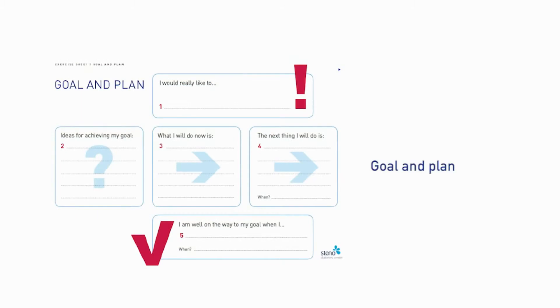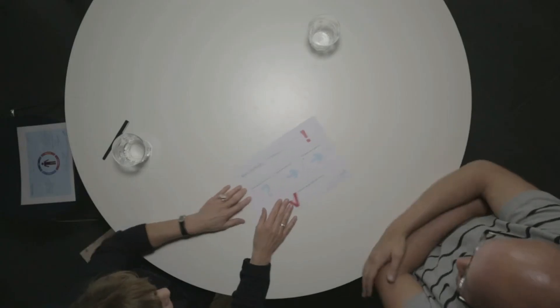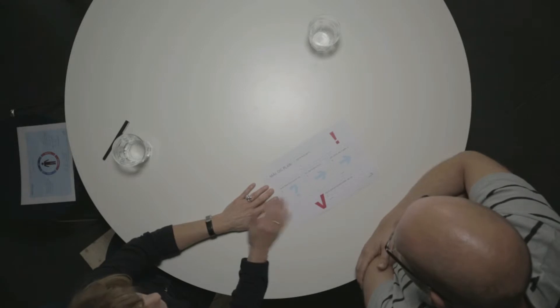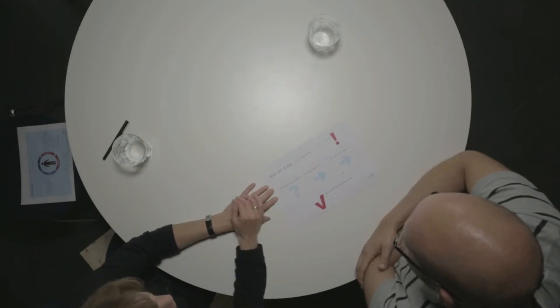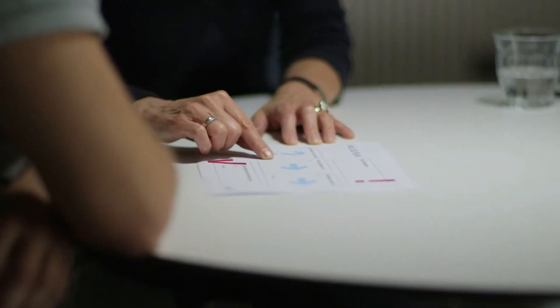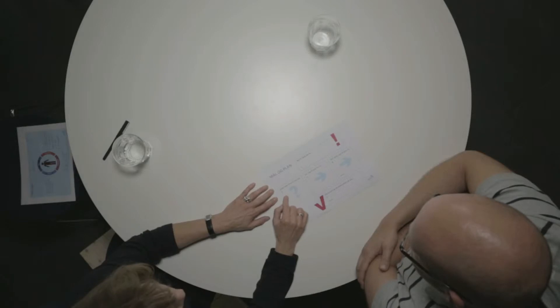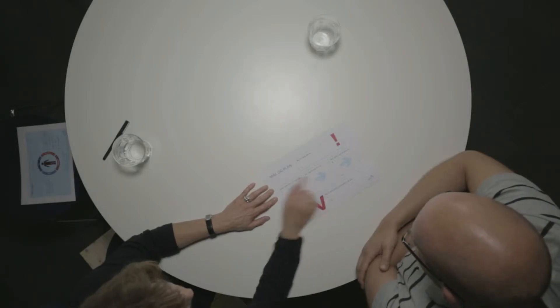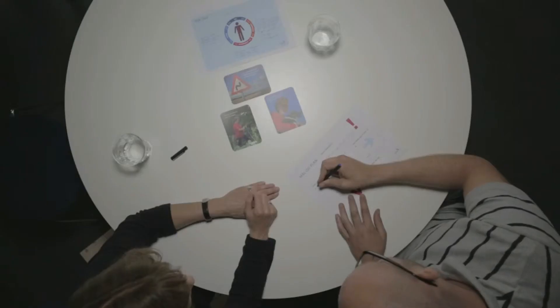The purpose of the dialogue tool Goal and Plan is to help patients focus on a concrete goal that is personally important to them and to make a realistic plan for how to reach the goal step by step. The goal emerges from working with other tools such as My Day and My Challenges. First, the patient identifies a concrete goal — for instance, 'I want to lose weight, five pounds.'